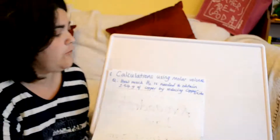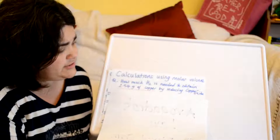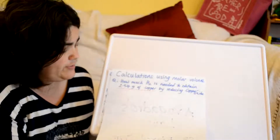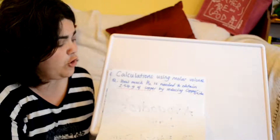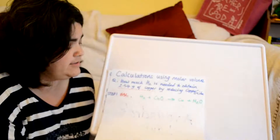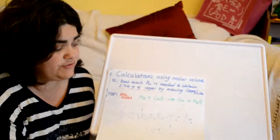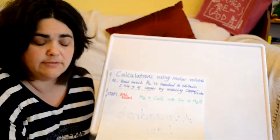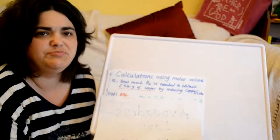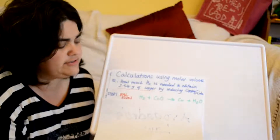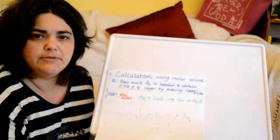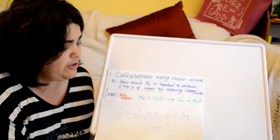We're going to do a couple of calculations just to prove it to you. When I put the question up, you can pause the video, write down the details, and then go through it step by step. So, here's the question: how much hydrogen (H₂) is needed to obtain 2.54 grams of copper by reducing copper oxide?